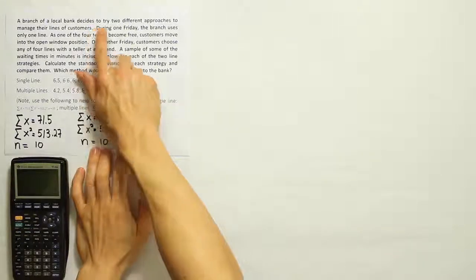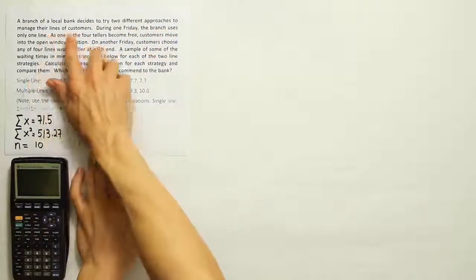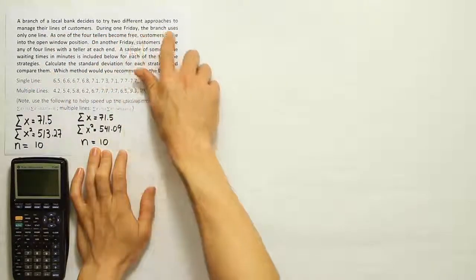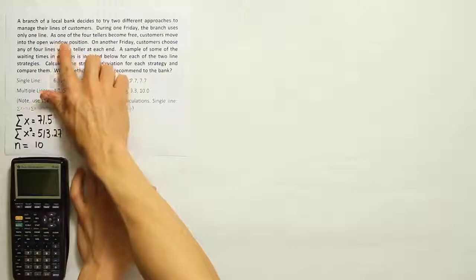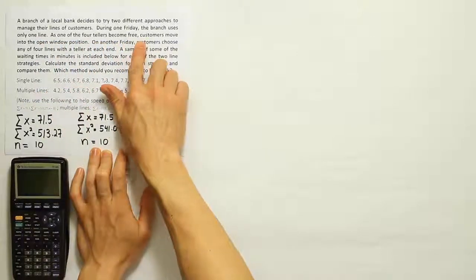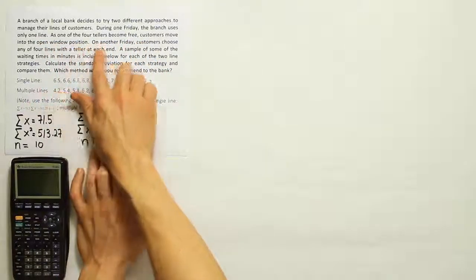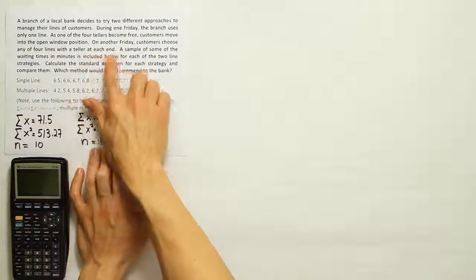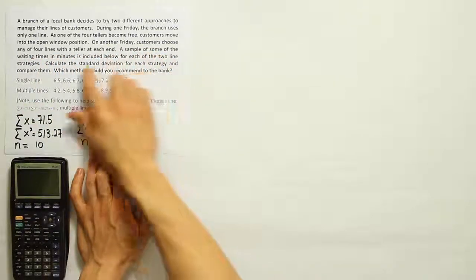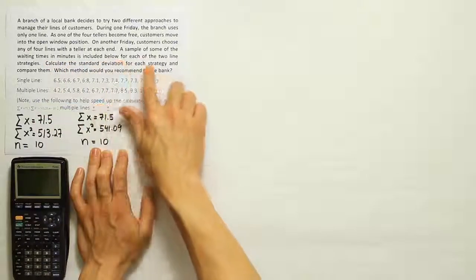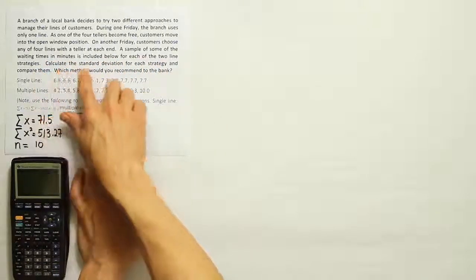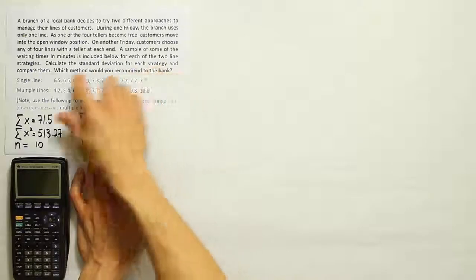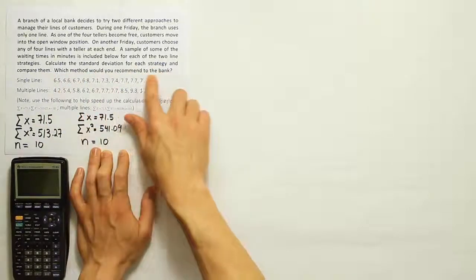A branch of a local bank decides to try two different approaches to manage their lines of customers. During one Friday, the branch uses only one line. As one of the four tellers becomes free, customers move into the open window position. On another Friday, customers choose any of four lines with the teller at each end. A sample of some of the waiting times in minutes is included below for each of the two line strategies. Calculate the standard deviation for each strategy and compare them. Which method would you recommend to the bank?